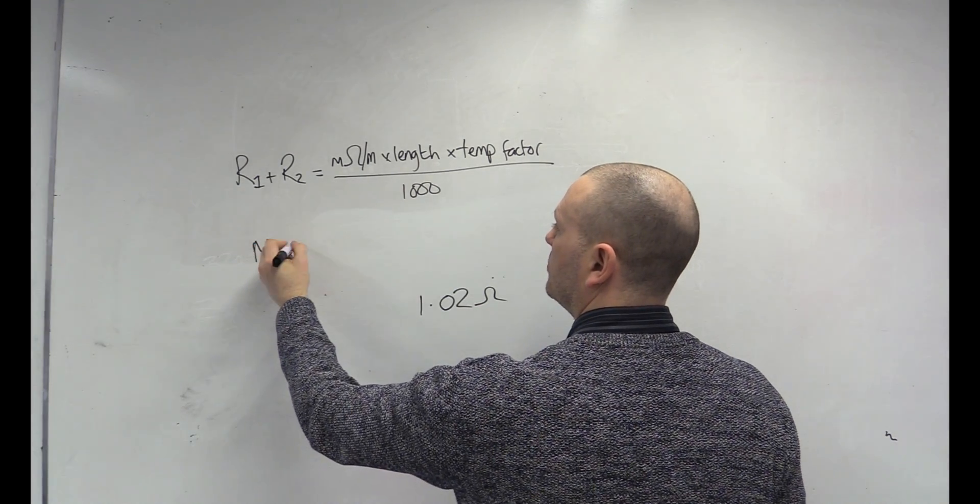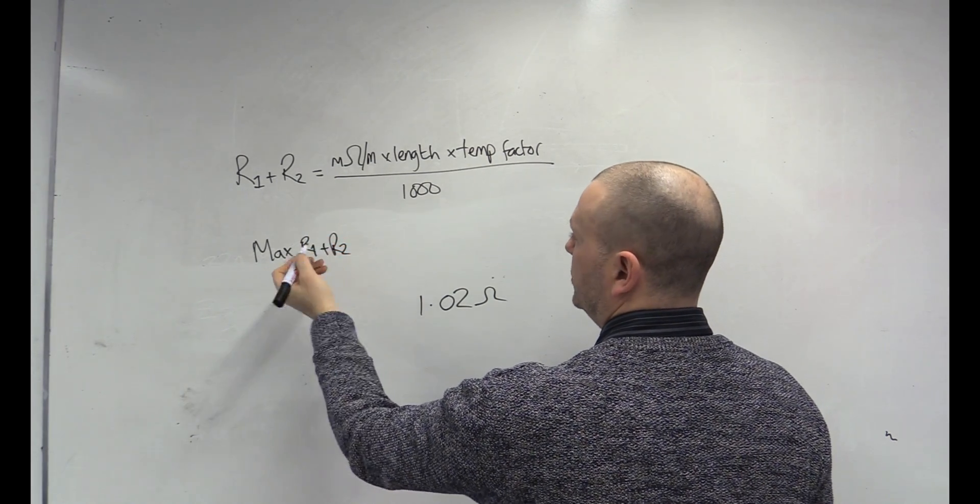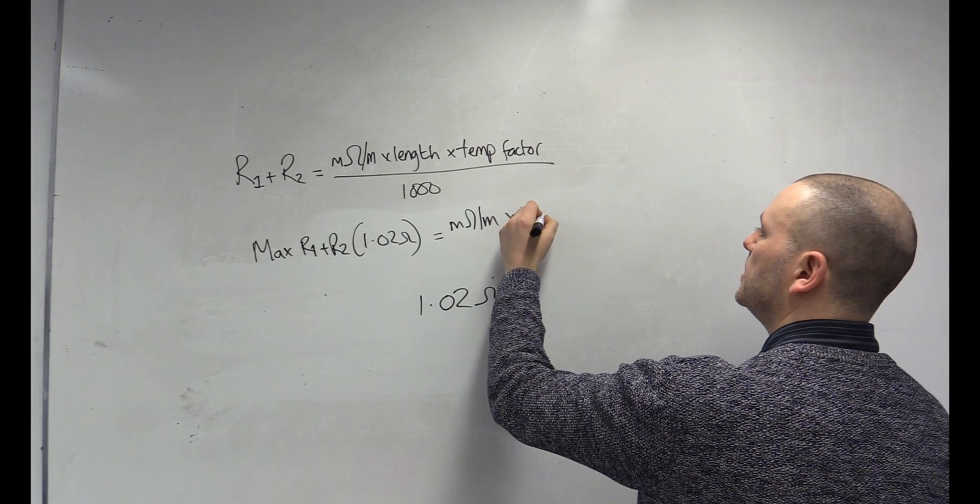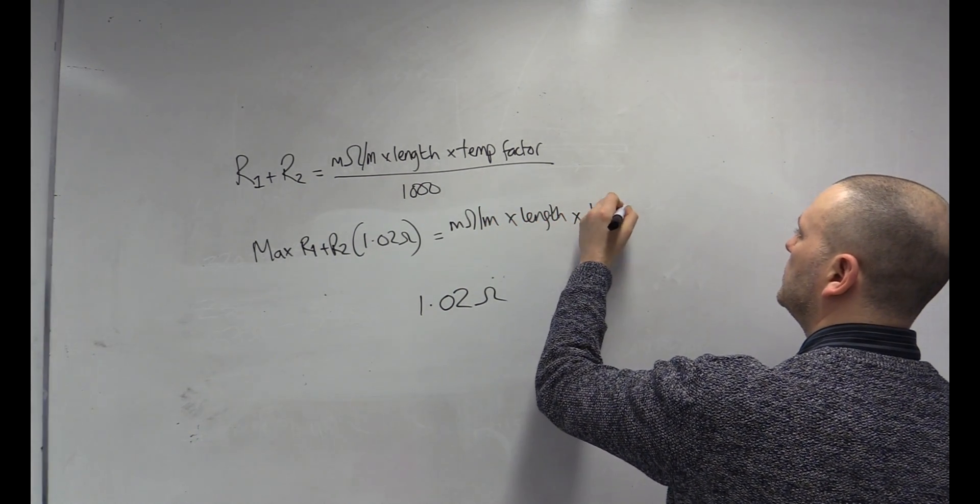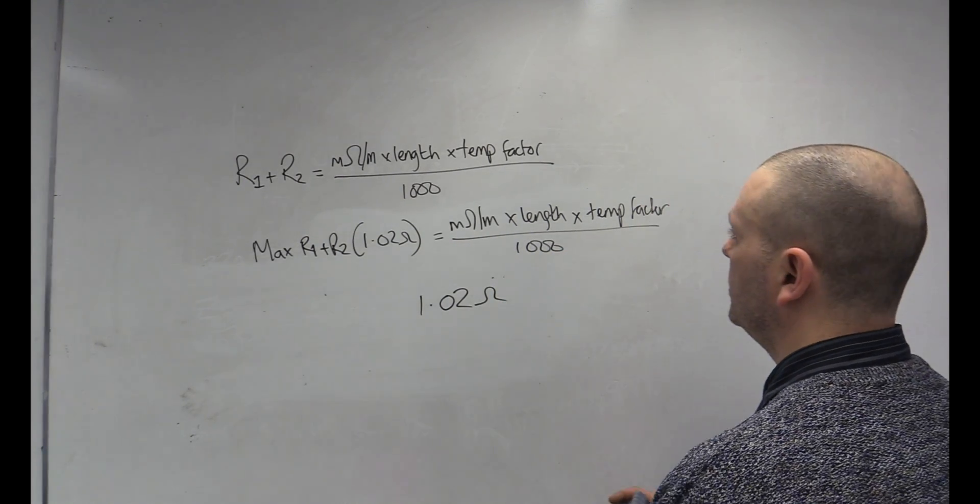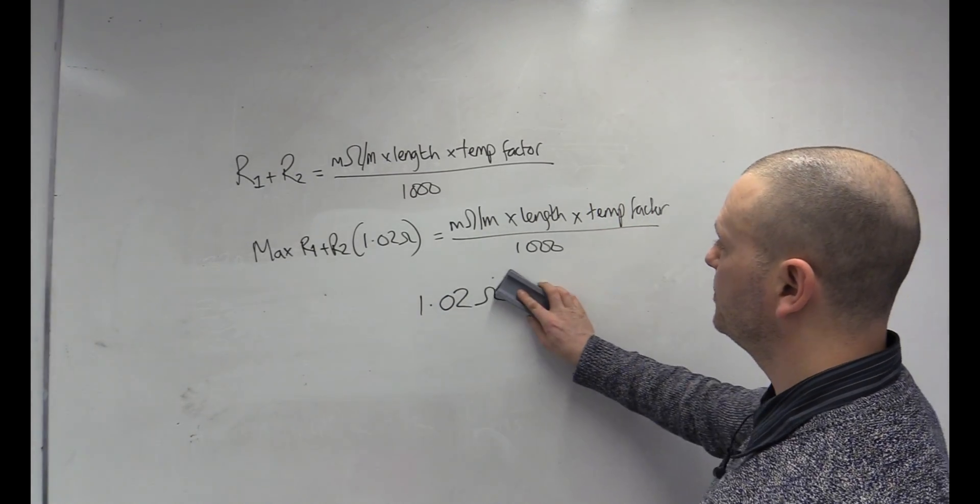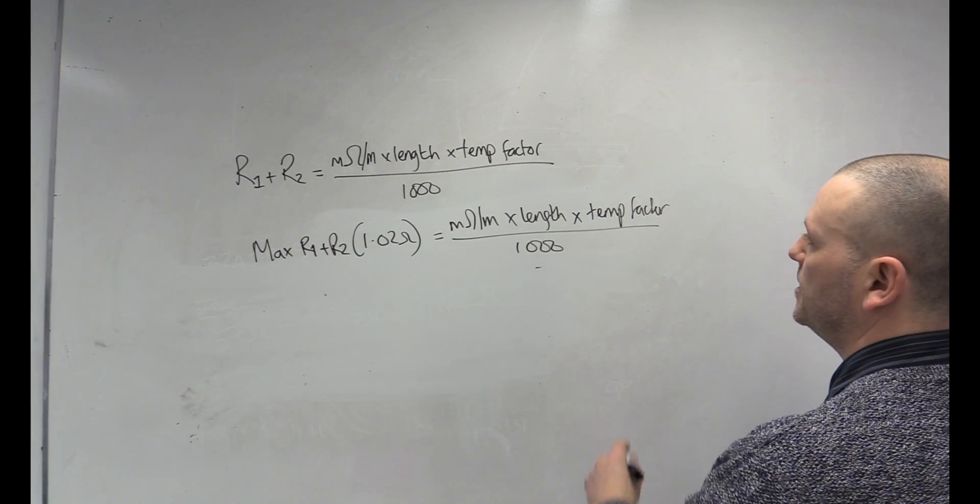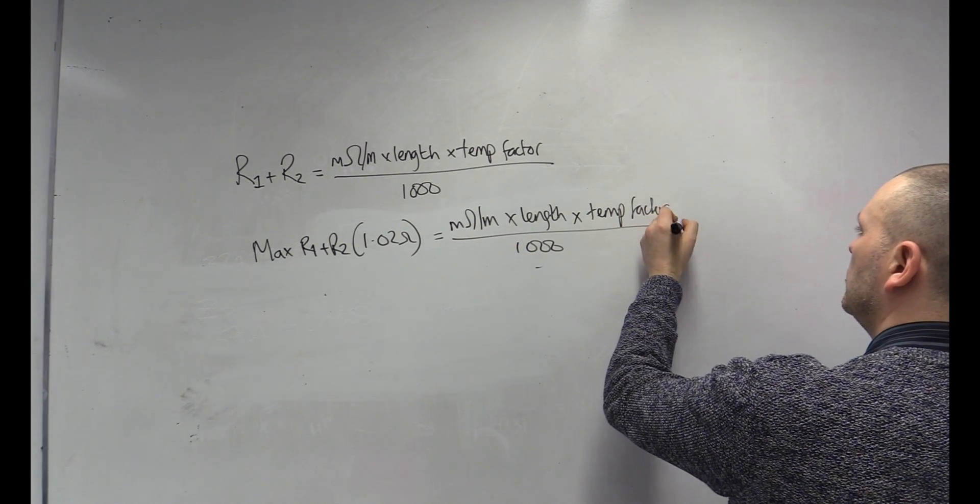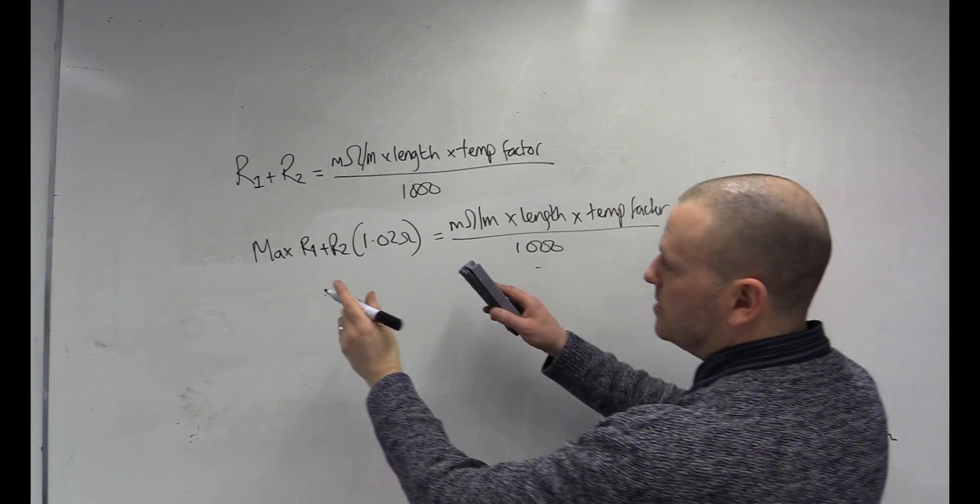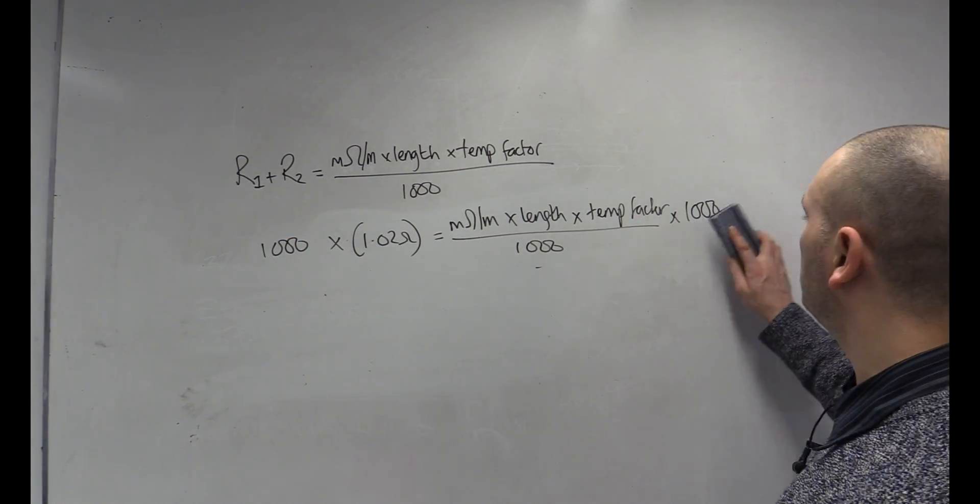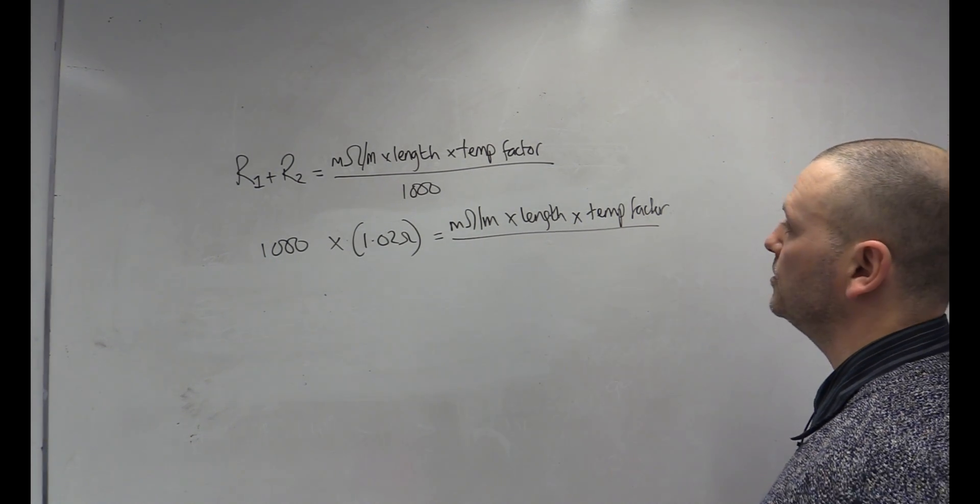So, let's put that in instead of R1, R2. So, max R1, R2, which is 1.02 now, is equal to milliohm per meter times length times the temp factor divided by 1,000. So, now we just need to transpose this equation and make sure that we've got everything in the right place. So, transposition says, get anything downstairs, upstairs first. We've got to cancel out the 1,000, so we're going to do the opposite function by itself. At the moment it's being divided. So, I'm going to multiply it by itself. I've unbalanced it. I need to copy it. Let's get rid of that. Times 1,000. And then we could leave it there. It is balanced, but there's no sense in doing it. 1,000 times 1,000 is 1. It's not doing anything. Get rid of it.